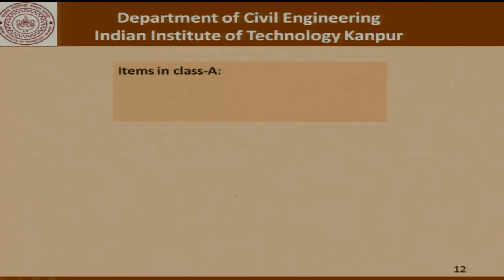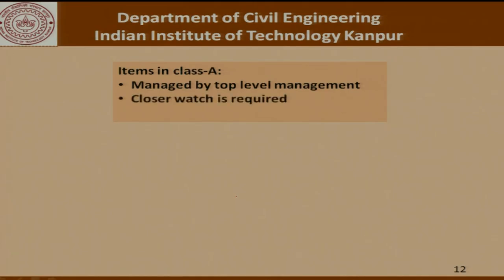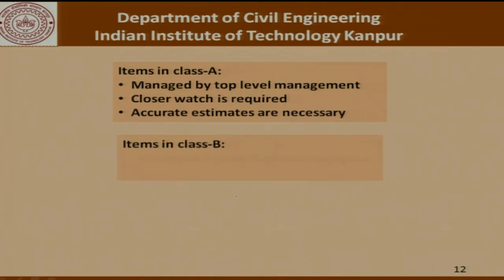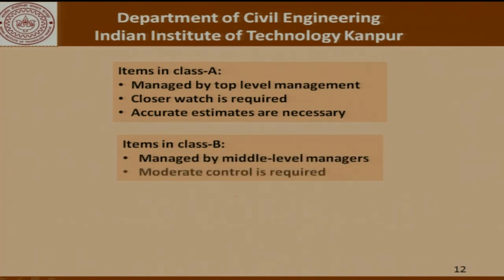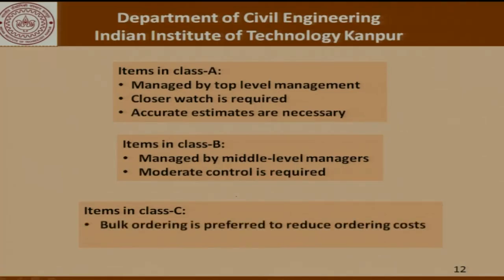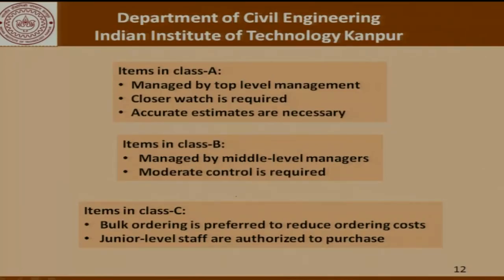Class A items should be managed by the top level management of a company, a closer watch is required, and accurate estimates are necessary — we do not want a surplus of these items because they are simply too expensive. Items in class B could be managed by middle level managers and moderate control is required. For items in class C, bulk ordering is preferred to reduce the ordering cost and junior level staff are authorized to make the purchase. This basically outlines a guideline for any company to establish its own operating procedure and empower executives to make purchases.